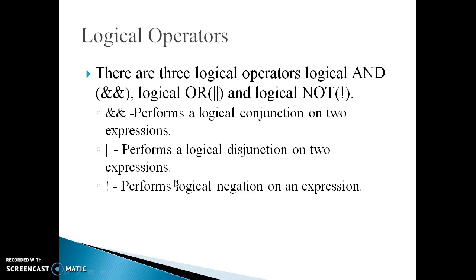The next one is the logical operator. An expression containing a logical operator returns either 0 or 1, depending upon whether the expression results in true or false. Logical operators are commonly used in decision making in C programming. There are three logical operators: logical AND — true only if all operands are true; logical OR — true only if either one operand is true; and logical NOT — returns true only if the operand is 0.